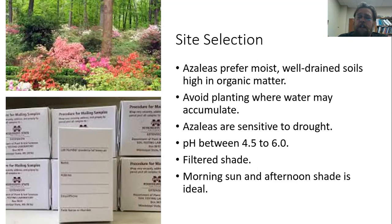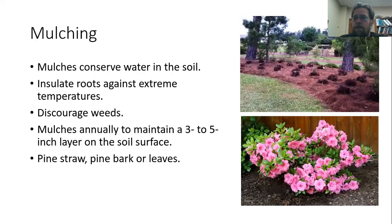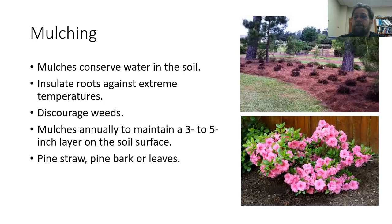Azaleas do very well in filtered shade. Ideally, an area with morning sun and some shade in the afternoon to protect them from afternoon heat does really well for them. It is always a good idea to apply mulch underneath your azaleas — that's going to conserve water in the soil, protect those shallow roots, and provide protection against extreme temperatures both in winter and in July and August. It'll also help take care of weed problems. Ideally replace that mulch on an annual basis, with a three to five inch layer. Pine straw, pine bark, or fallen leaves do fantastic as mulches for azaleas.